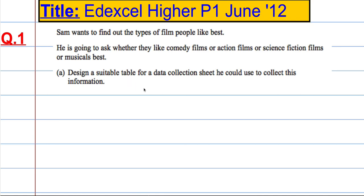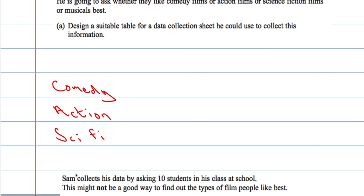We're asked to design a suitable table for a data collection sheet that he can use. So we've got to think about the four categories. We've got comedy, we've got action, we've got science fiction, sci-fi, and we've got musicals.